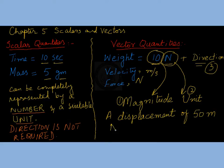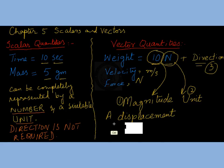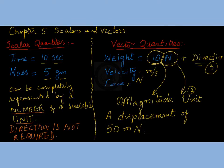So we can see: the magnitude is 50, the unit is meters, and the direction is north. These three things — magnitude, unit, and direction — are important to understand how vectors are represented. Now let me explain how we are going to draw this vector.